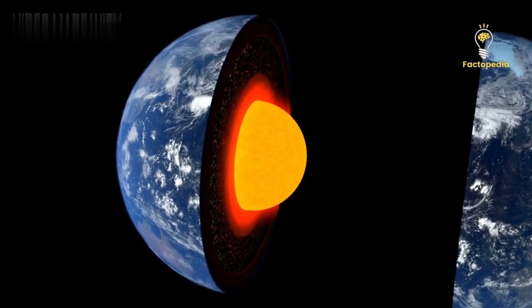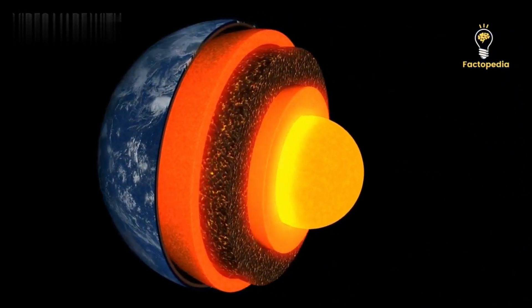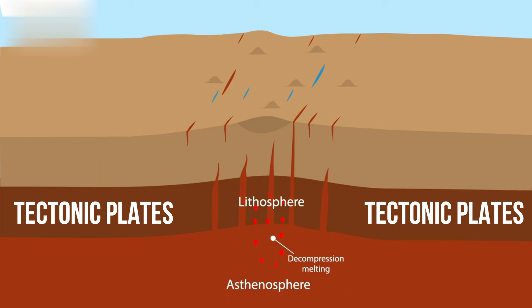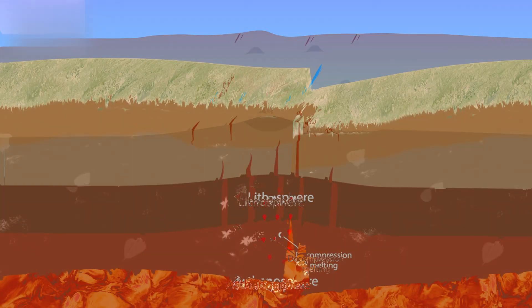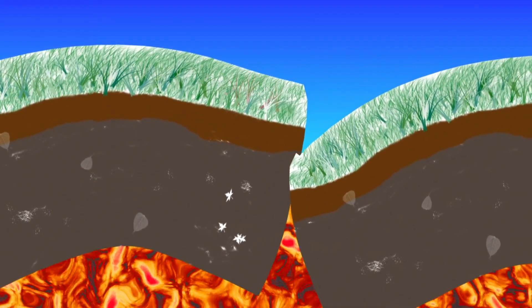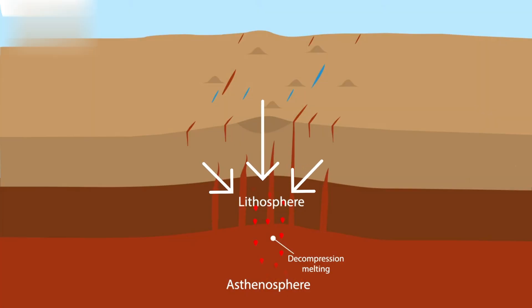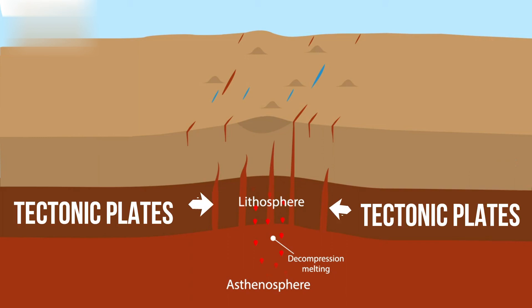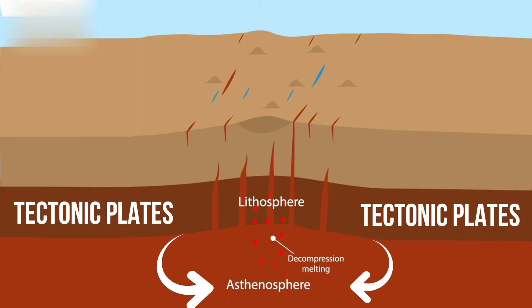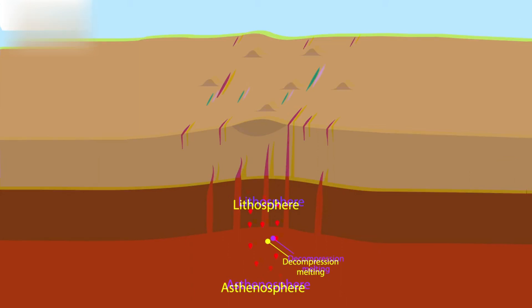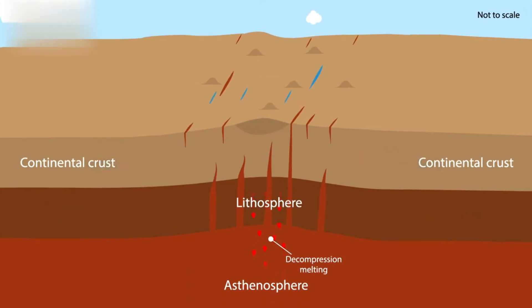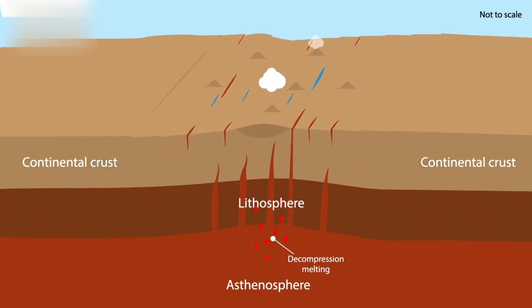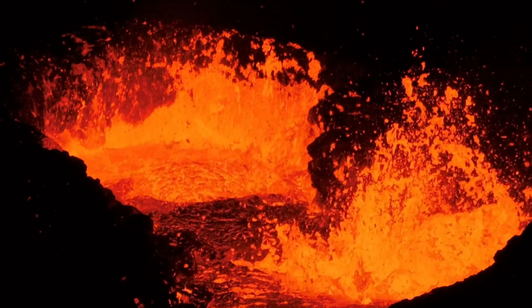The Earth's outer layer is like a giant jigsaw puzzle, made up of huge pieces called tectonic plates. Gondwana was basically a massive landmass made up of several of these tectonic plates stuck together. The lithosphere is the rigid outer layer of the Earth. It is divided into several large and small tectonic plates. These plates float on a harder and more fluid layer called the asthenosphere, which is located below the lithosphere. The tectonic plates in the lithosphere are always slowly moving, driven by forces in the Earth's interior, like heat and pressure.